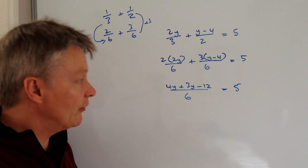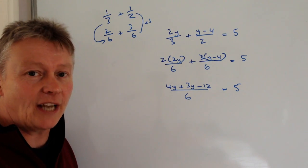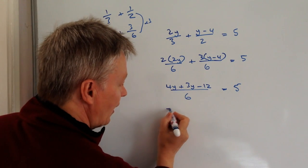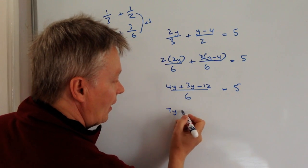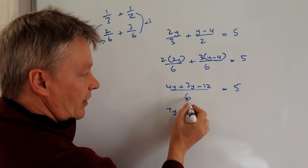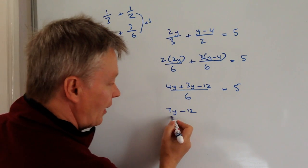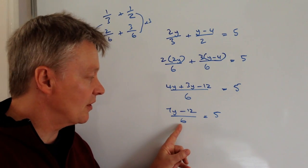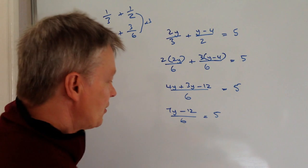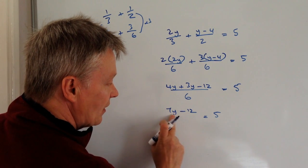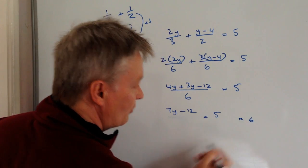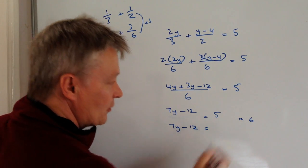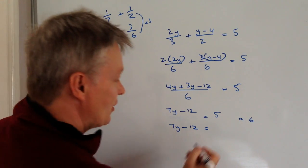And then it's just really a case of tidying this up and dealing with it as a normal linear equation. So I'm going to just add those two together. I get 7y minus 12. And I've got this six here. Well, I'm going to multiply both sides through by six, because if I do, I lose this denominator of six. So I end up with 7y minus 12 equals five times six, which is 30.